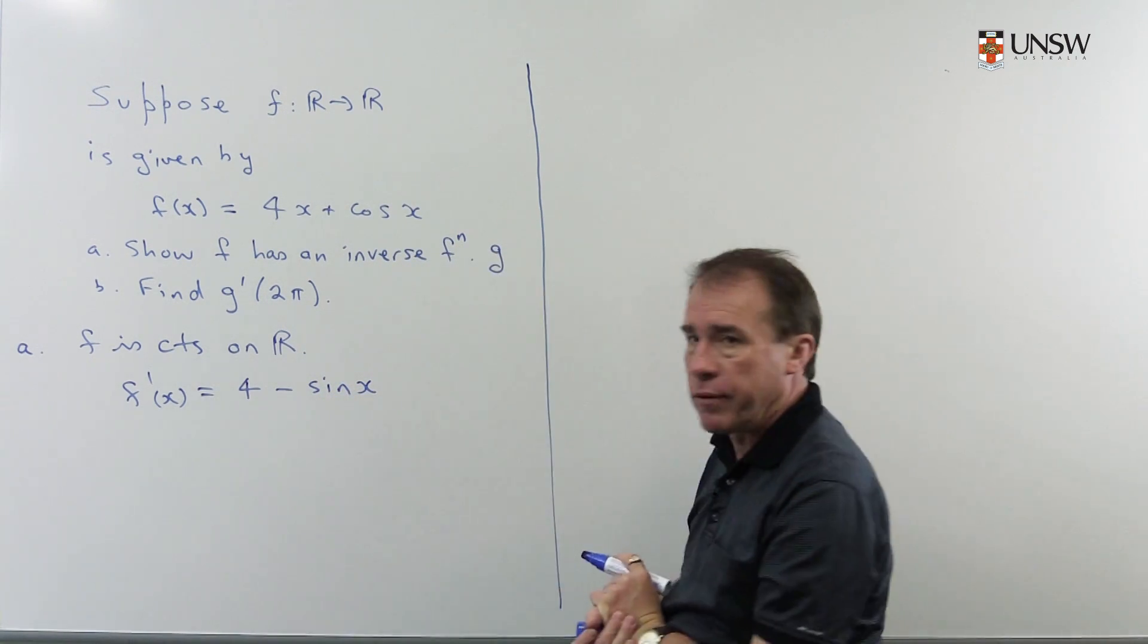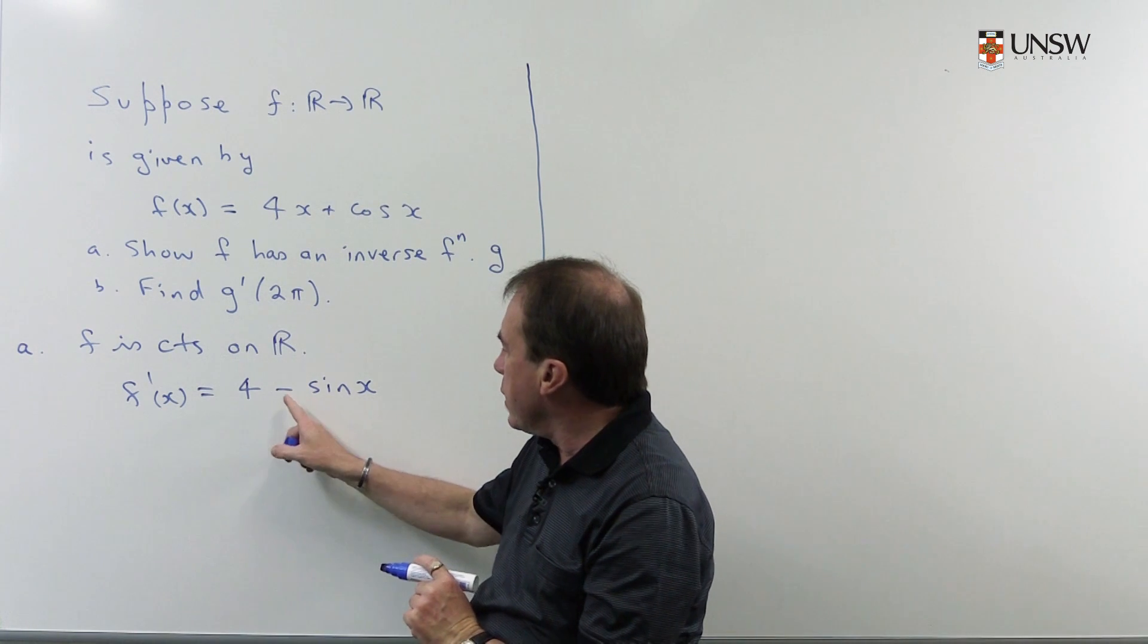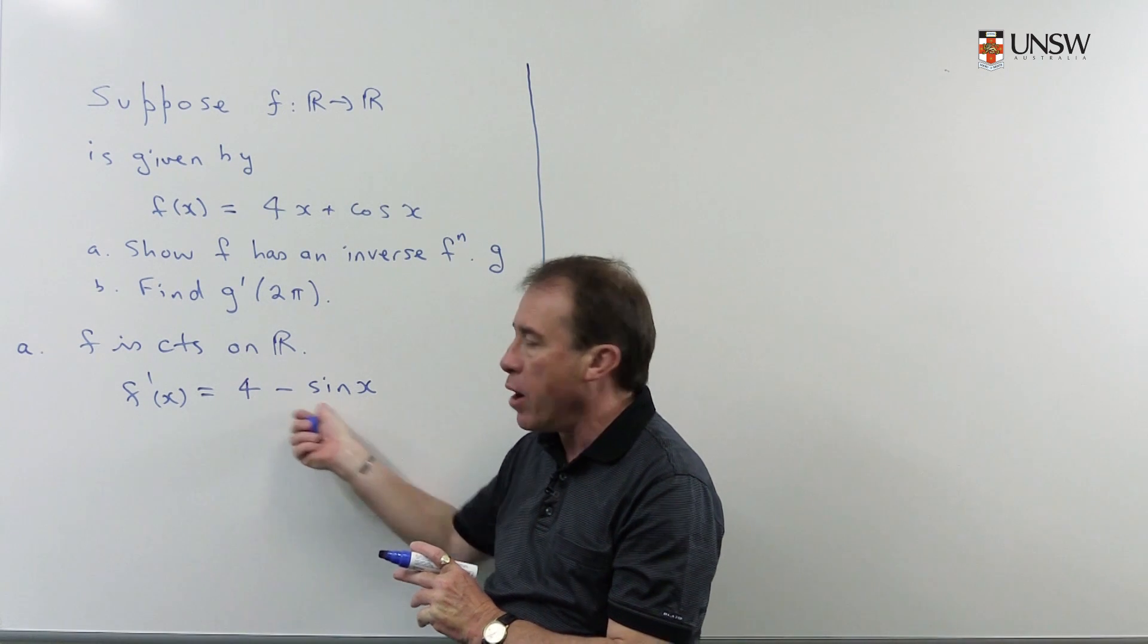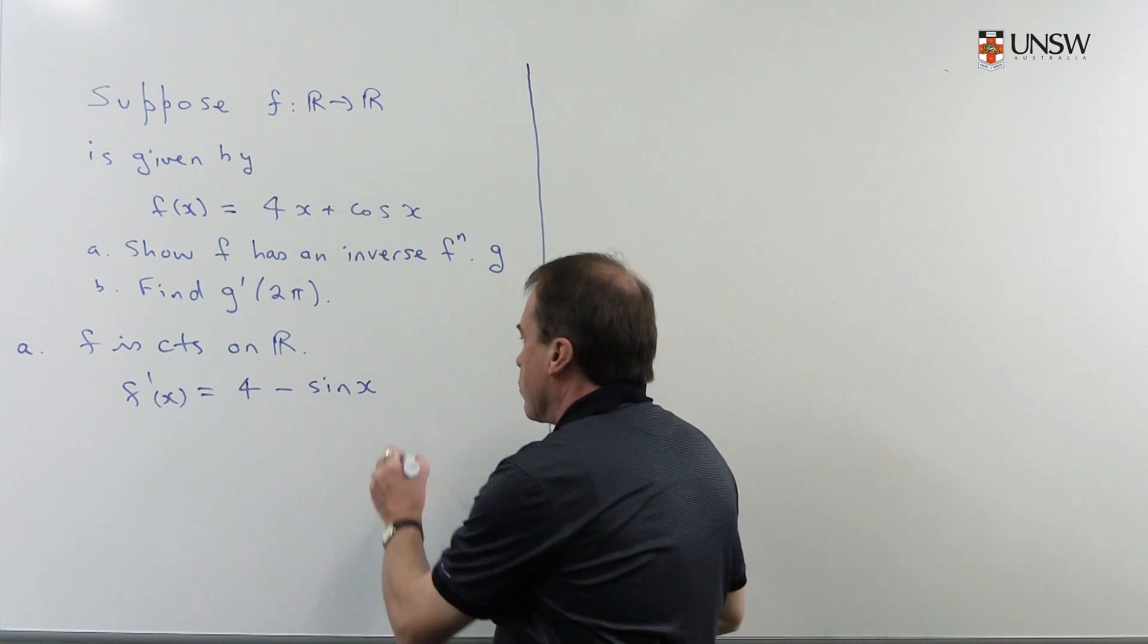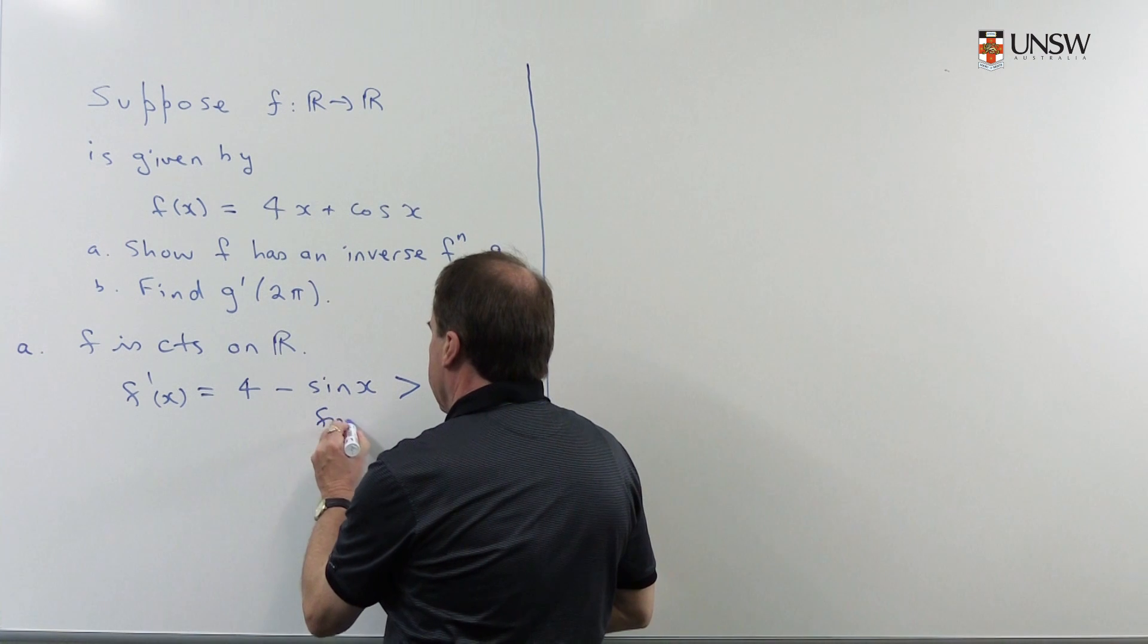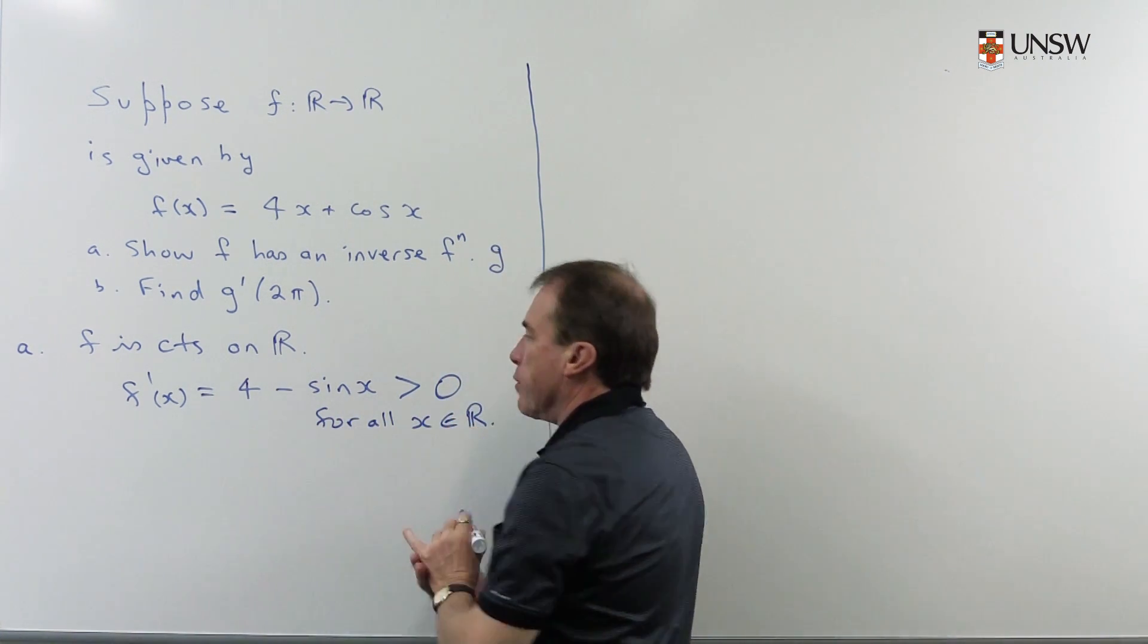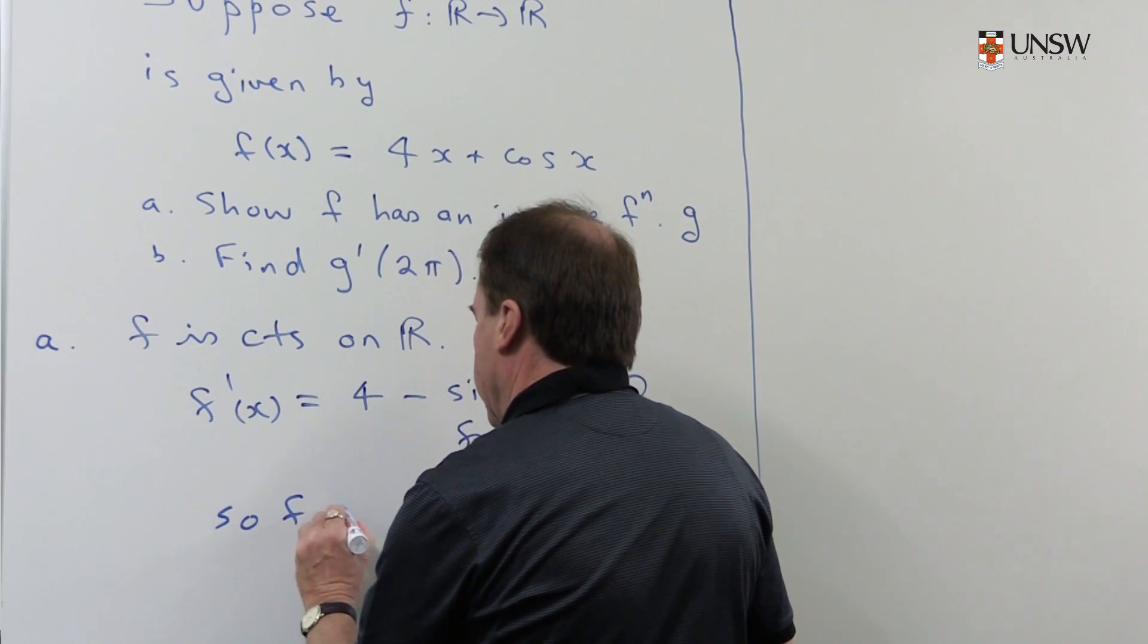So we take the derivative of the function, and when we look at this, we can see that sin(x) can only be between minus 1 and 1. So if I take 4 minus that number, it's always going to be positive. So I can write down here the derivative is positive always, for all x. That means the function is an increasing function.